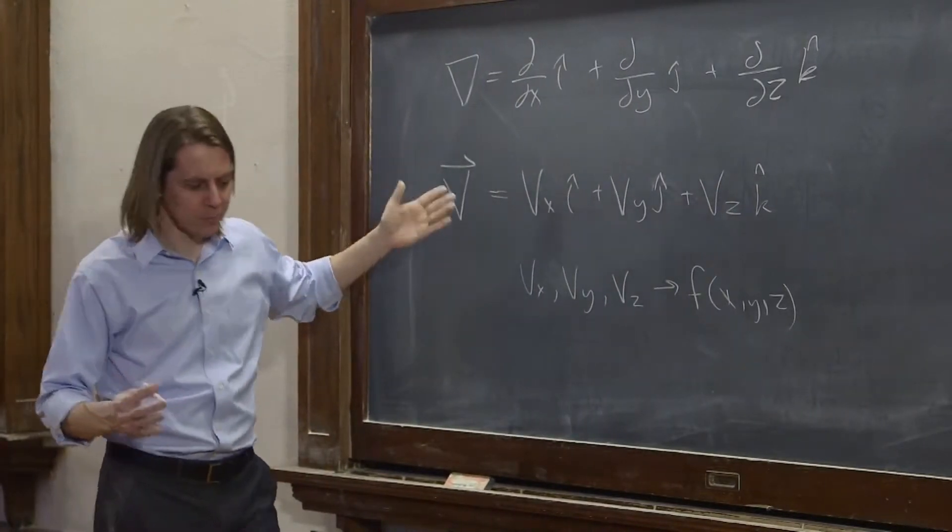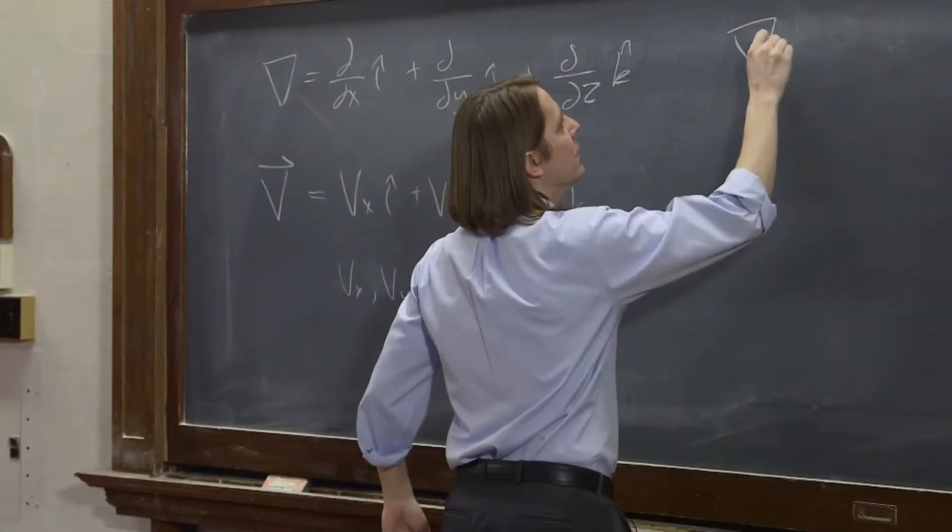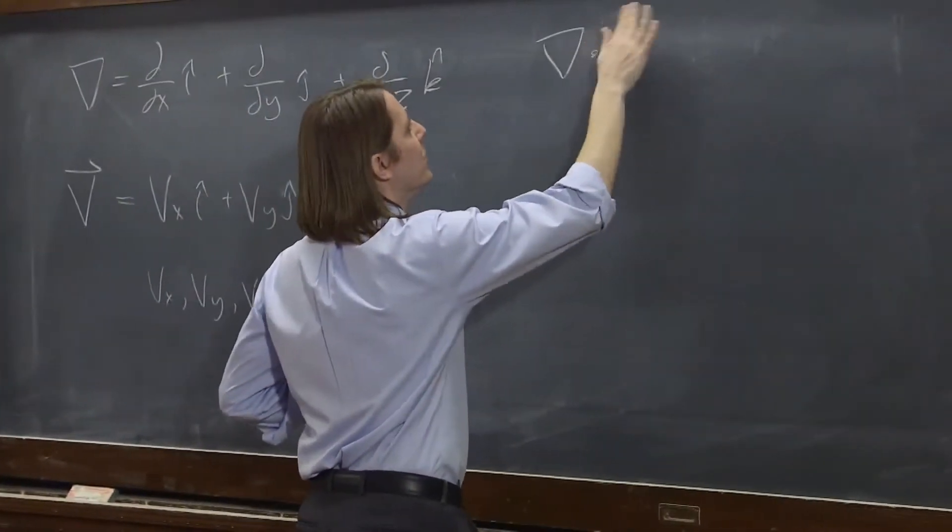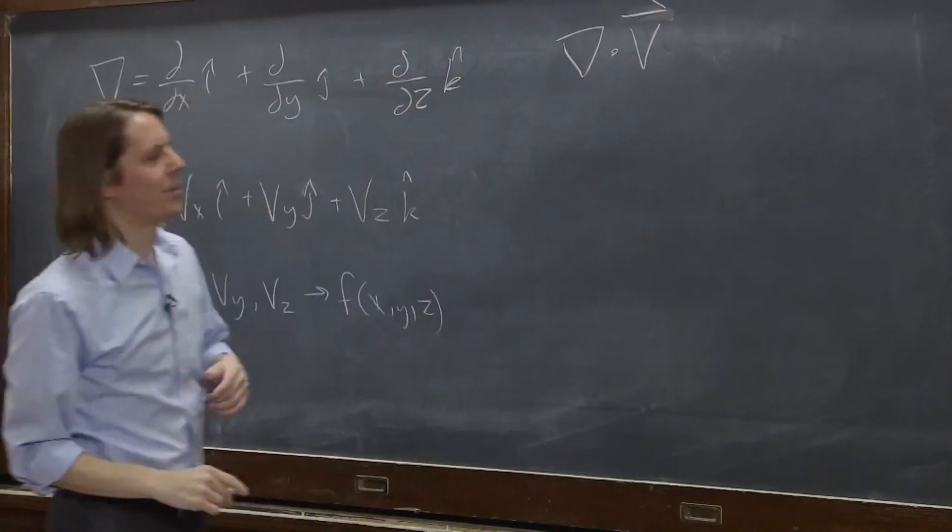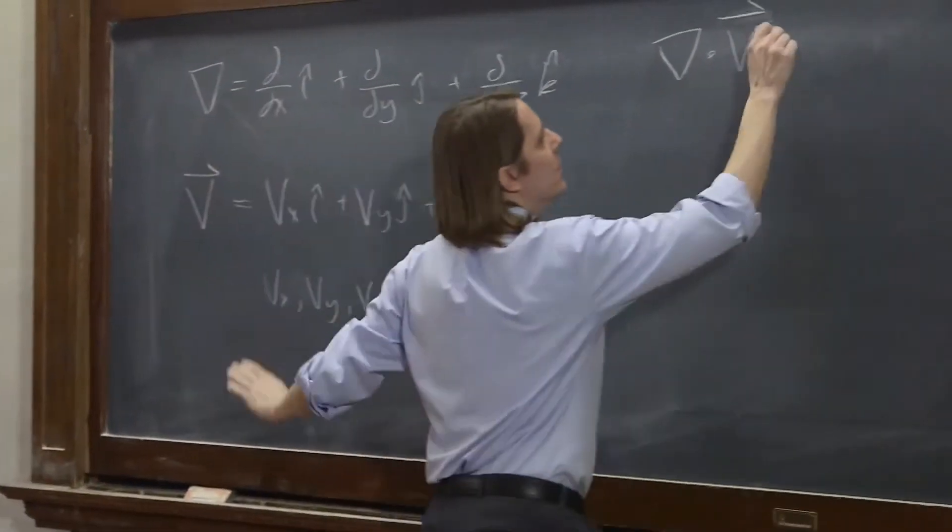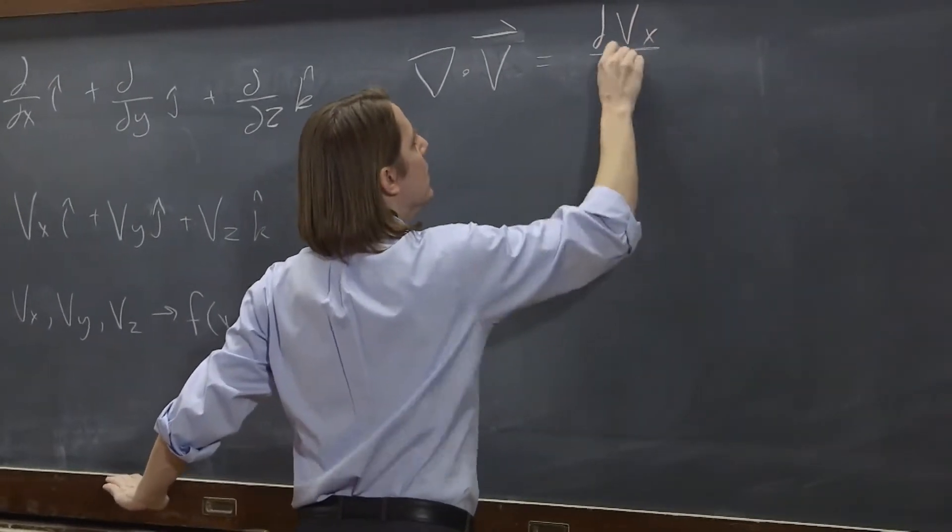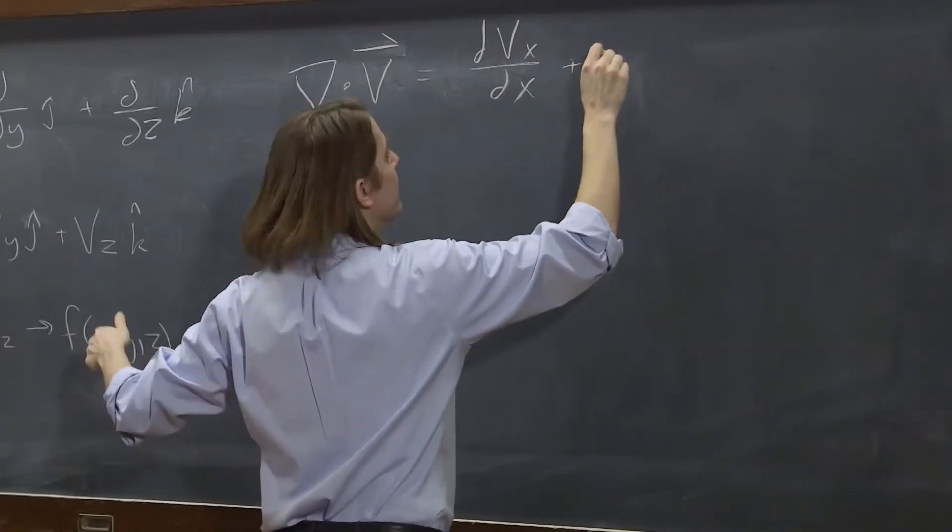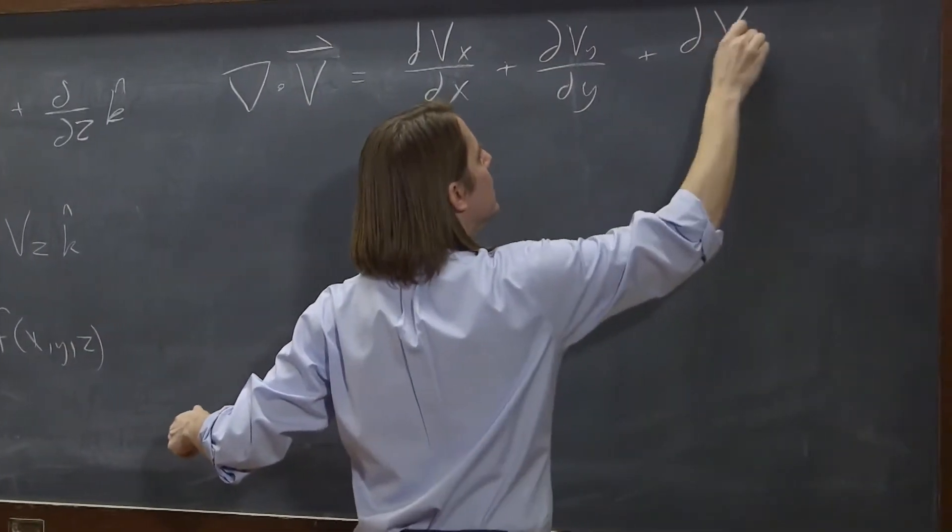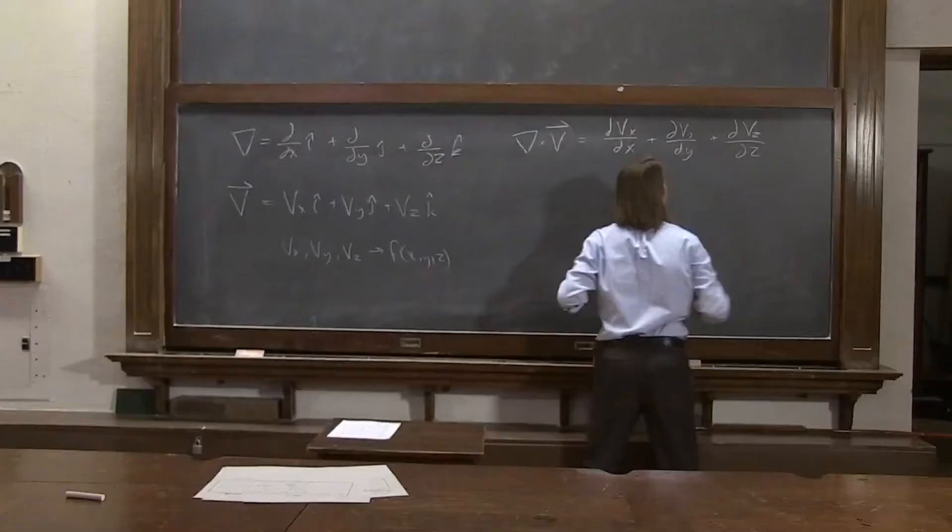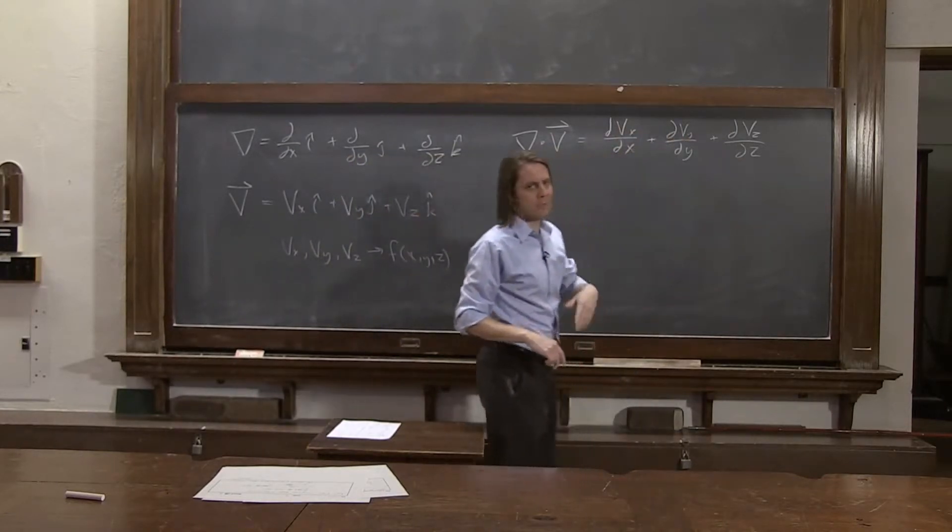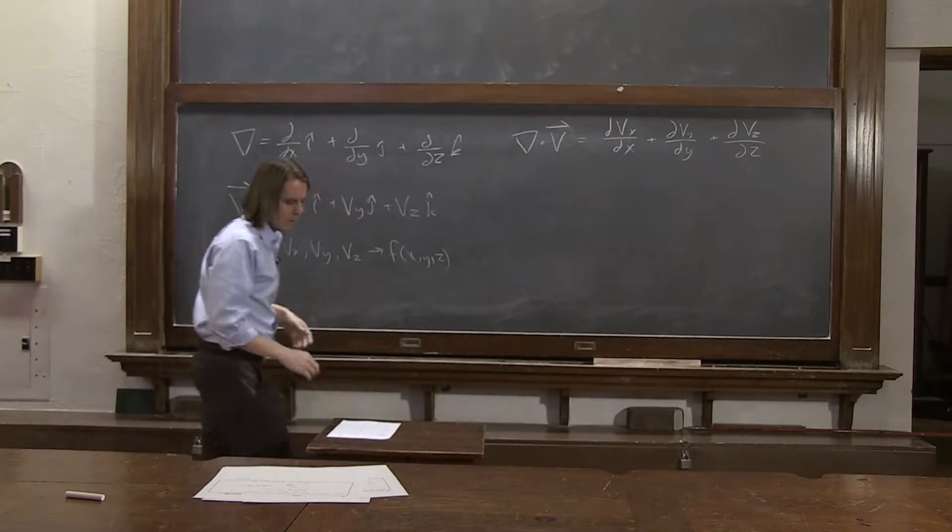Well, one way is a dot product. So what we can write is del dotted with V. If you do that, d/dx operates on Vx. So that's dVx/dx. And d/dy operates on Vy, dVy/dy. And d/dz operates on Vz. So that's your dot product. And again, keep in mind, these are functions. Vx, Vy, Vz can be functions of x, y, or z.